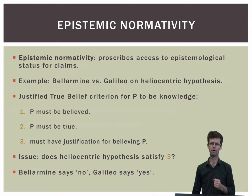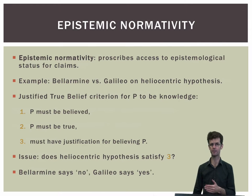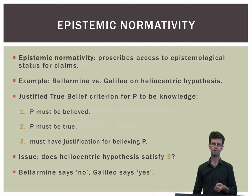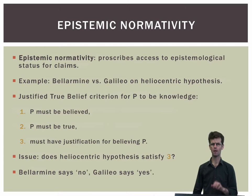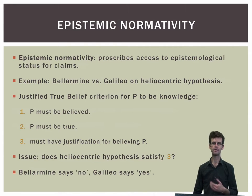Epistemic normativity prescribes certain kinds of epistemological claims or access to certain kinds of epistemological status for claims. As an example, we can take the argument presented by Cardinal Bellarmine against Galileo's claim that the Copernican heliocentric system constituted new knowledge. For the Copernican theory to be knowledge, it needed to satisfy at least three requirements — usually characterised as the justified true belief, or JTB, theory of knowledge. One, it had to be believed. Two, it had to be true. And three, it needed to have adequate justification for believing it to be true.